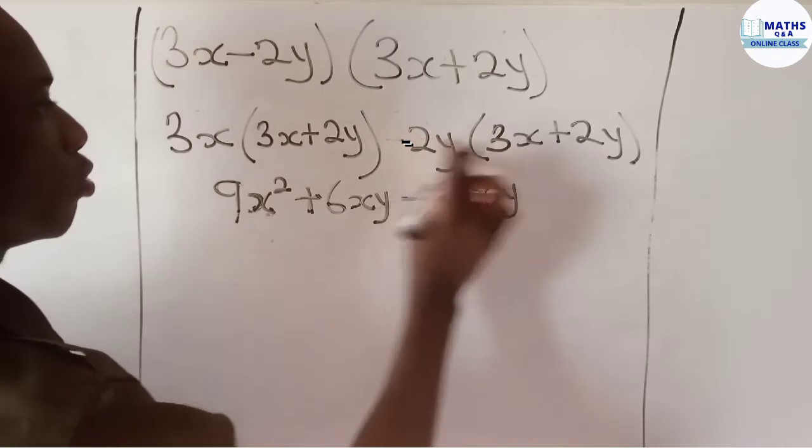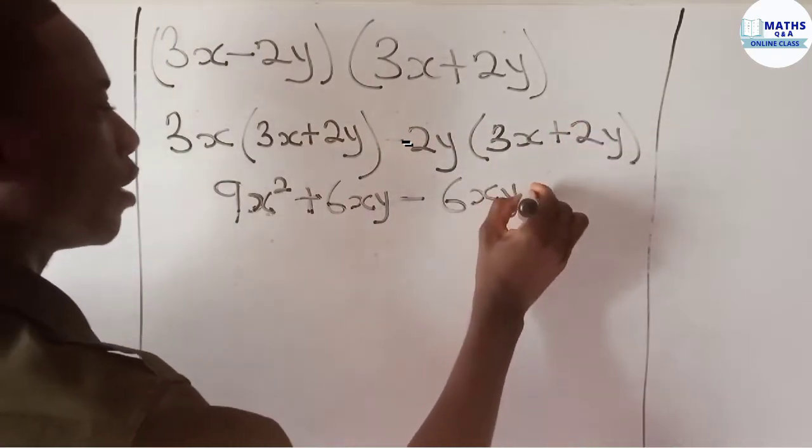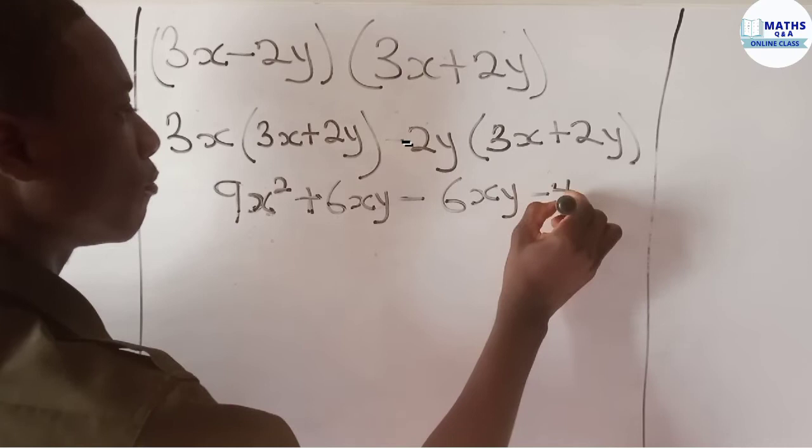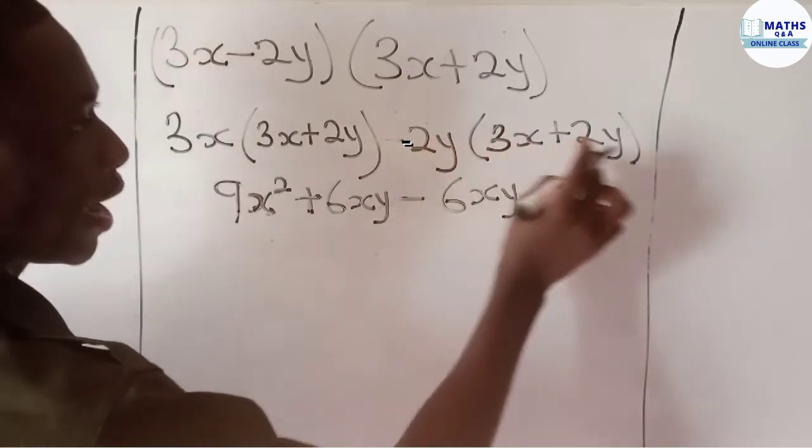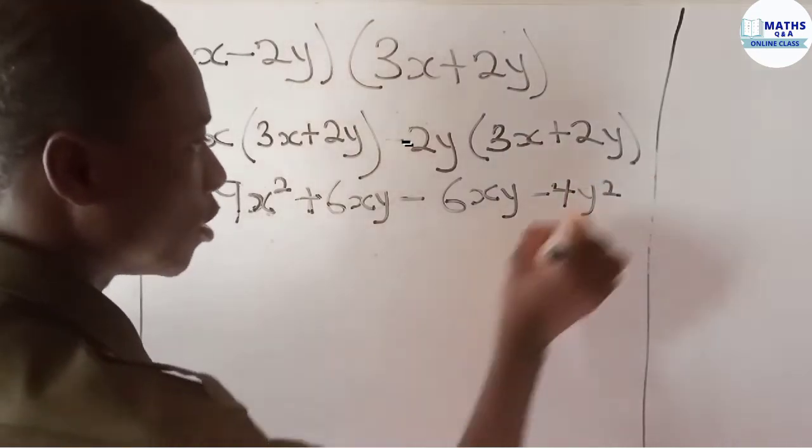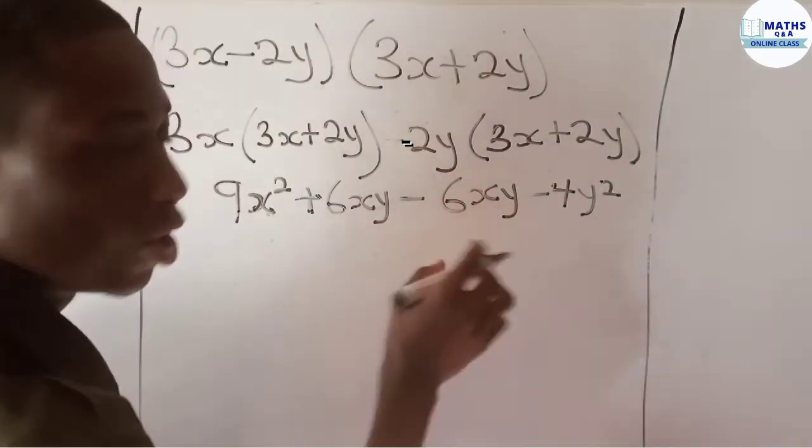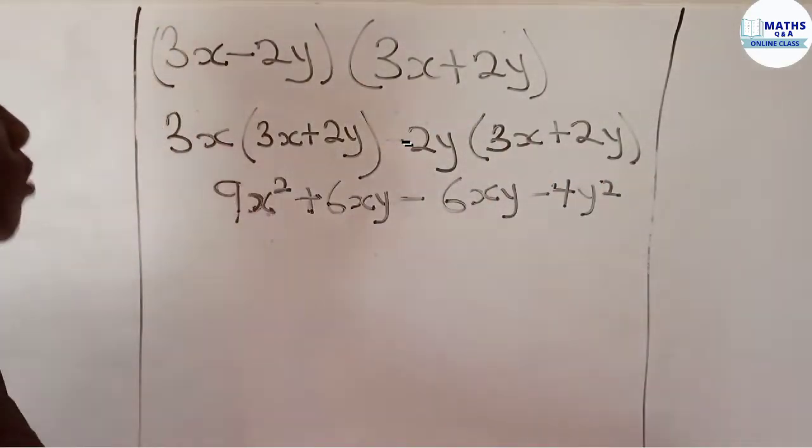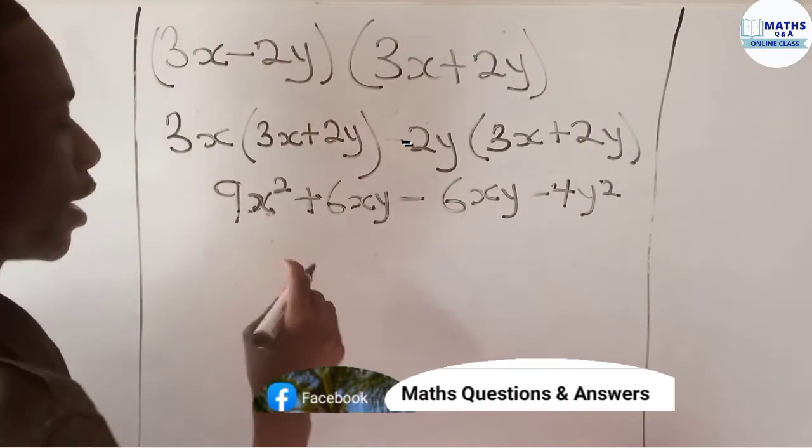And then we have y multiply y, which gives y squared. So this becomes the expanded form of this question. Now that you are done, you can now group like terms and then add or subtract only like terms.